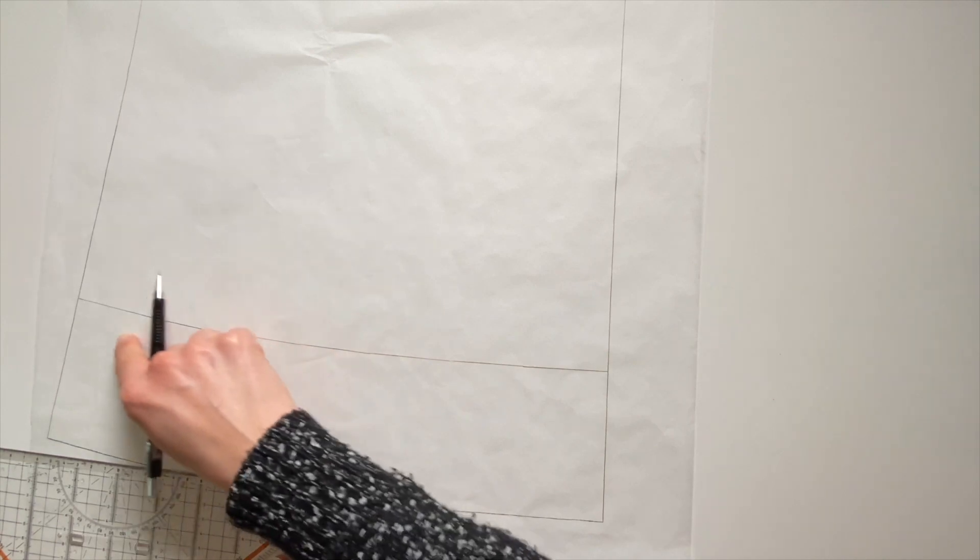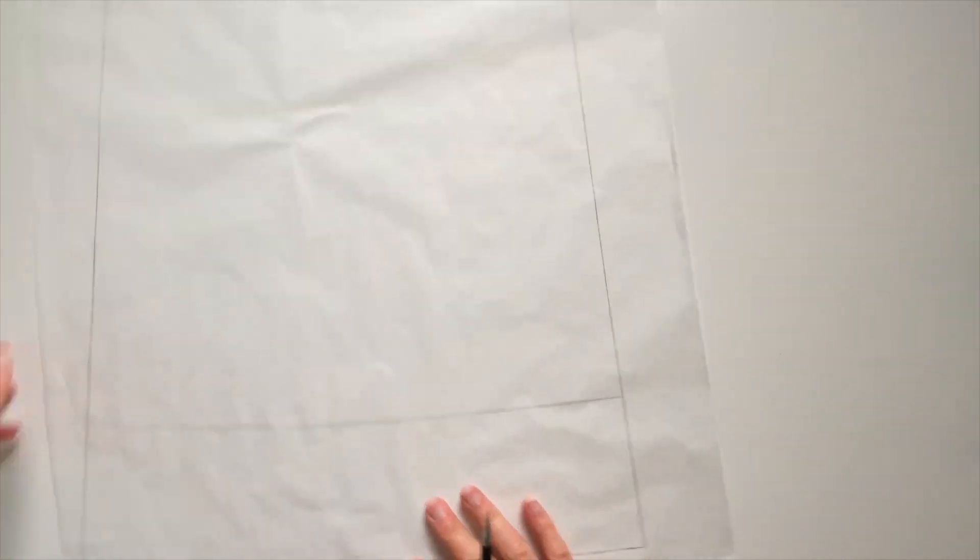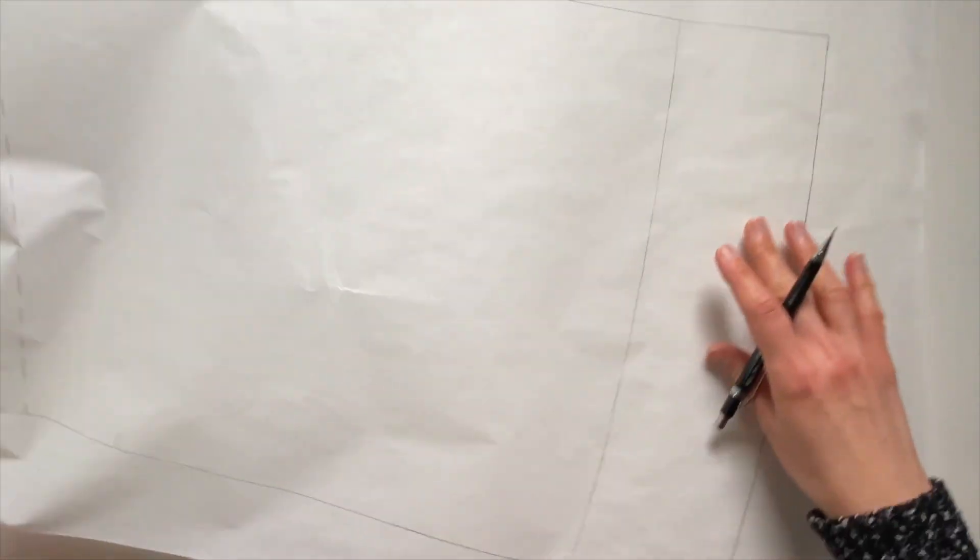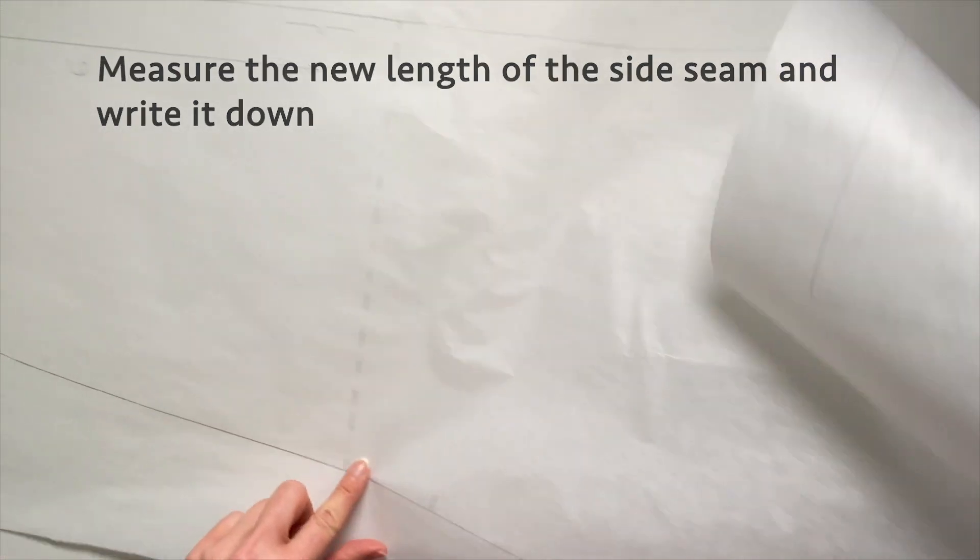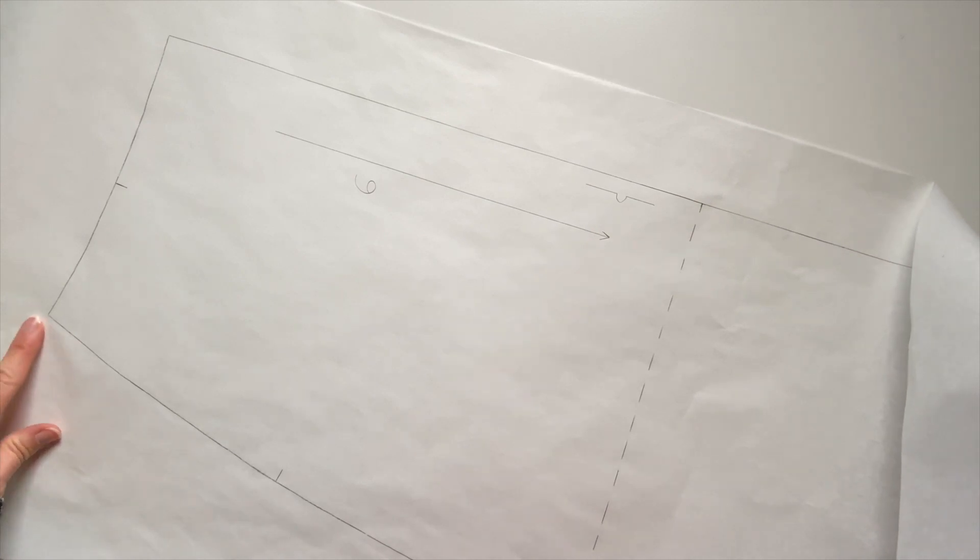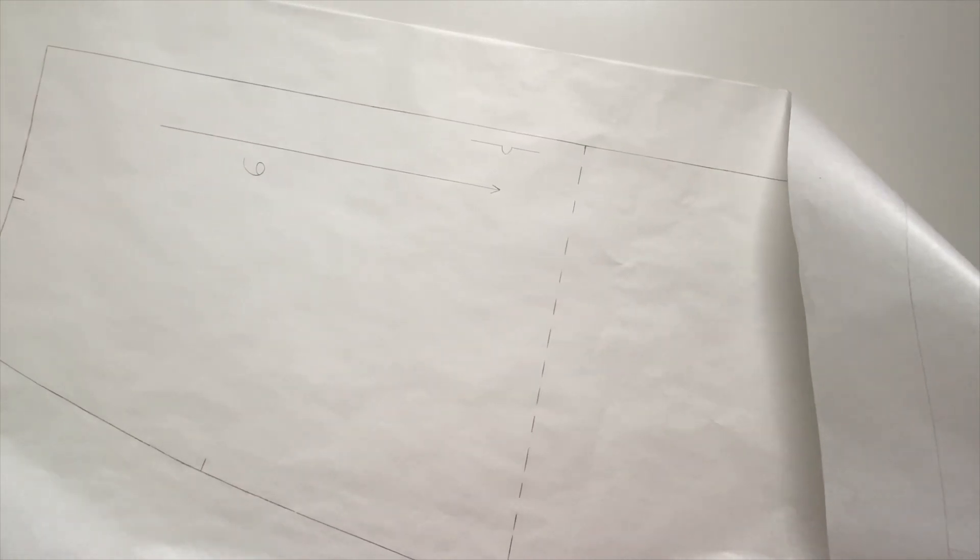So it'll look a little like this and I can just add the 1.5 centimeter seam allowance here and also to the side seam. I always also to double check measure the side seam all the way up here, you can just write it down. And then when you adapt the front part of the skirt you can always double check.